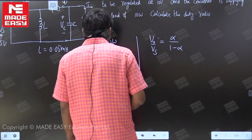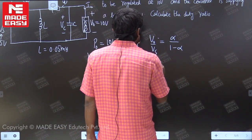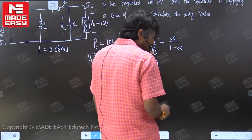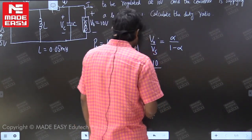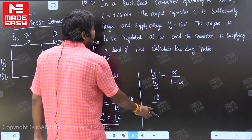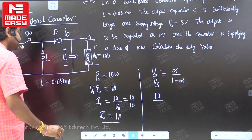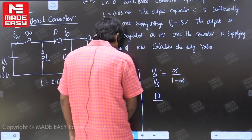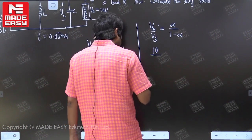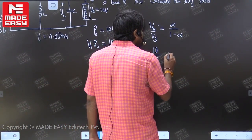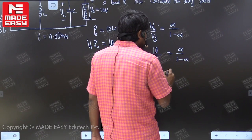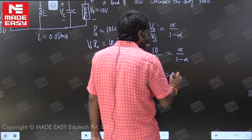Here output voltage is 10 volts and supply voltage is 15 volts. So 10 by 15 is equal to alpha by (1 minus alpha), which gives alpha equal to 0.4.